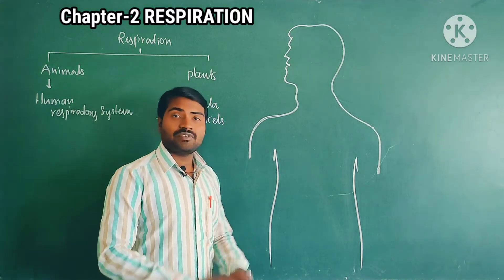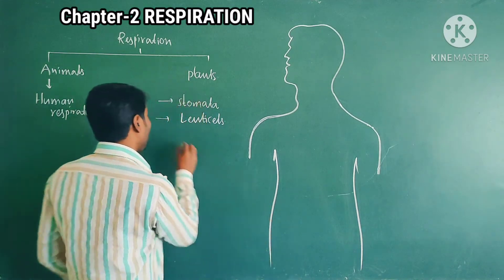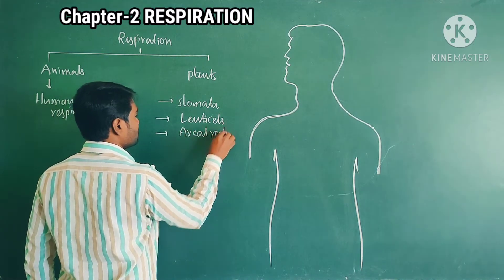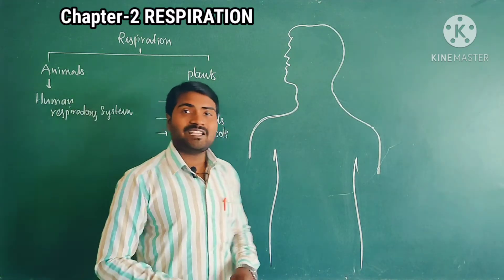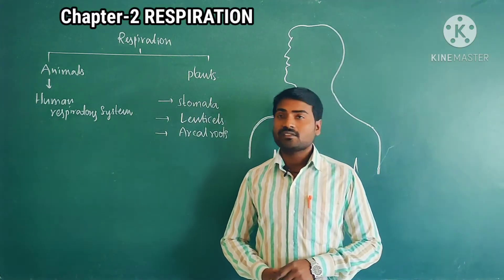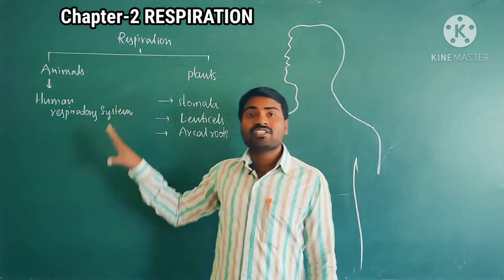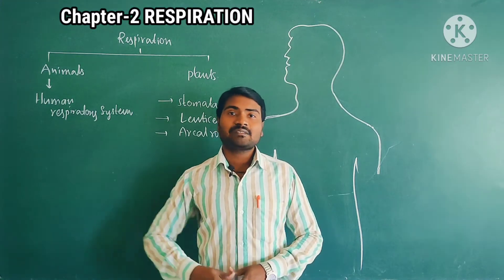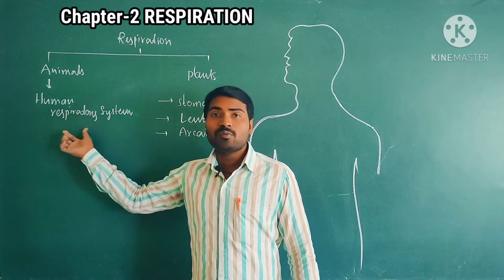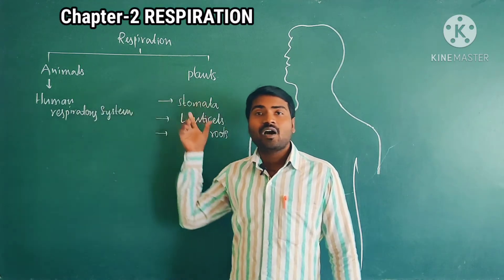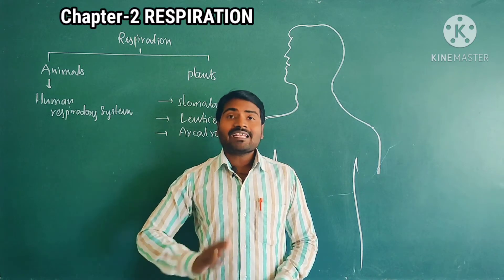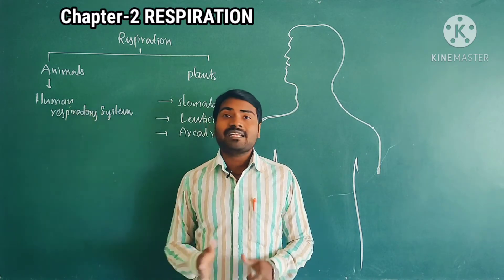Lenticels are present on the stem, and also aerial roots — which are special roots that help in the exchange of gases. So this is the topic we are going to cover in 10th class biology lesson: respiration, respiration in human beings, and how exchange of gases takes place in plants. Let us start with the human respiratory system.